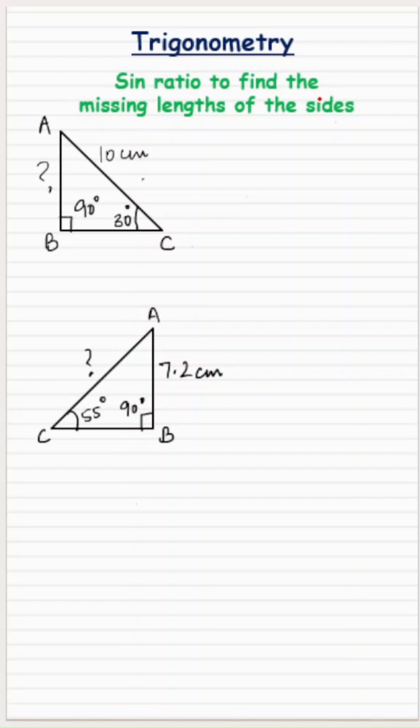Hey everyone, let's see how sine ratio is used to find the missing lengths of the sides of the right triangle.